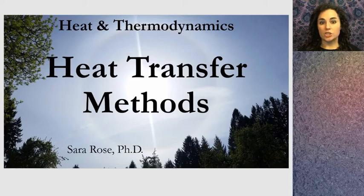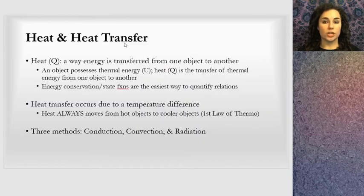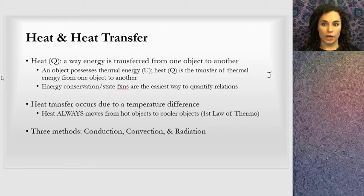This is a lesson on heat and heat transfer methods in the heat and thermodynamics unit. We've looked at heat and heat transfer. Heat Q is a way energy is transferred from one object to another. An object possesses thermal energy U, and heat Q is the transfer of thermal energy from one object to another. These are in units of joules. Energy conservation and state functions are the easiest way to quantify these relations, so we're going to dig deeper into energy.